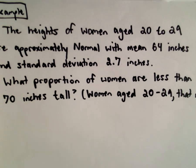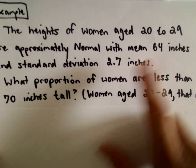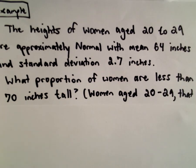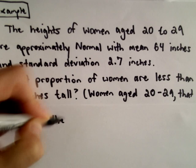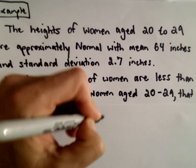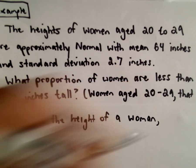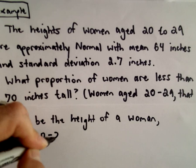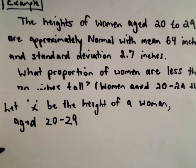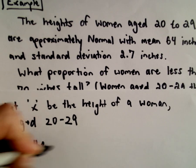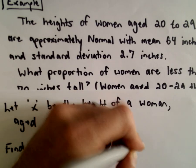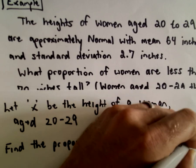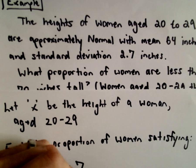Just to be clear, I'm talking about women aged 20 to 29. So we want to figure out what proportion of women are less than 70 inches tall, knowing that the average height is 64 inches with a standard deviation of 2.7 inches. I'm going to let x be the height of a woman aged 20 to 29. We want to find the proportion of women satisfying the following.